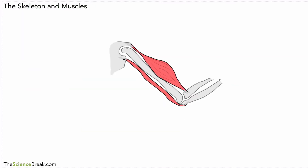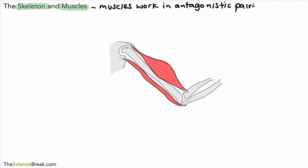Let's take a look at how the skeleton and muscles work together — how bones and muscles work together. Here we've got the bones and muscles in the arm. We say that muscles work in antagonistic pairs. What does that mean? Well, this keyword — antagonistic — means that muscles have opposite action to each other; they work in the opposite way.